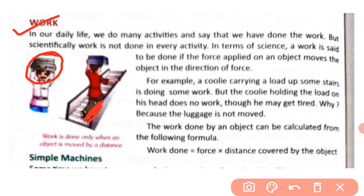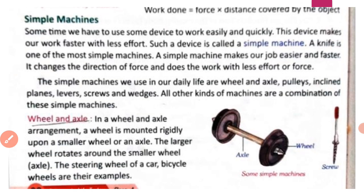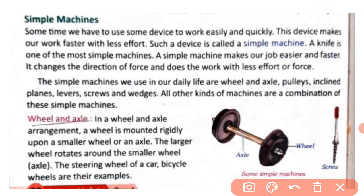The work done by an object can be calculated using the formula: Work Done = Force × Distance covered by the object. Work is complete when a force is applied on an object and the object moves a distance in the direction of that force.